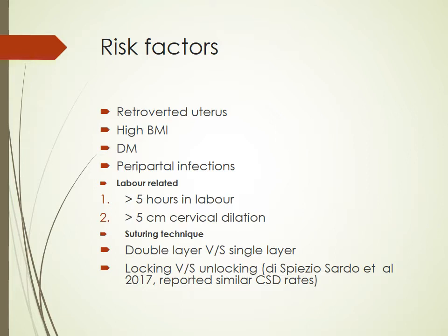Other risk factors include a retroverted uterus, high BMI, diabetes mellitus, and peripartal-related infections. Labor-related factors include being in labor for more than five hours, and cervical dilatation greater than five centimeters at time of caesarean. Suturing technique was also critical. Some studies showed double layer and unlocking sutures were associated with a thicker residual myometrial thickness post-caesarean, but the latest 2017 meta-analysis showed that chances of a scar defect were similar whether double layer, single layer locking, or unlocking suturing technique was used.